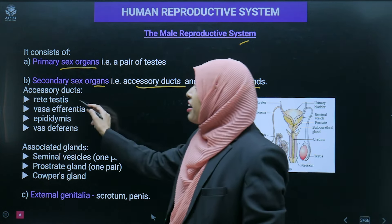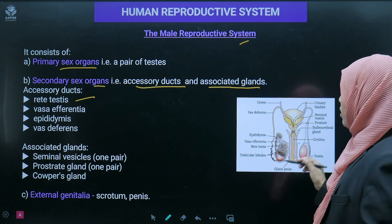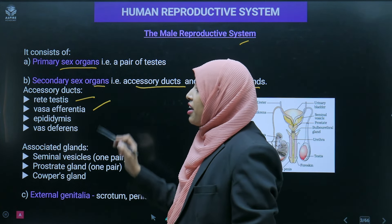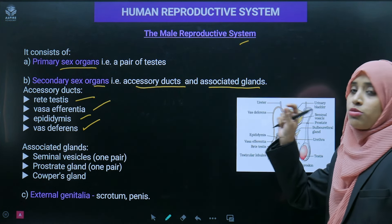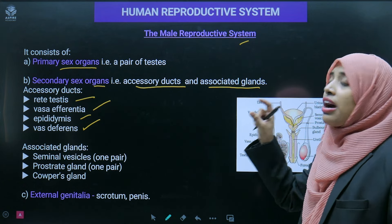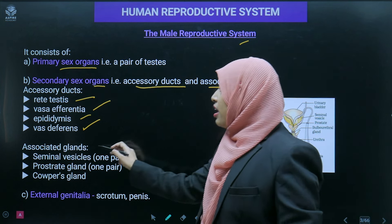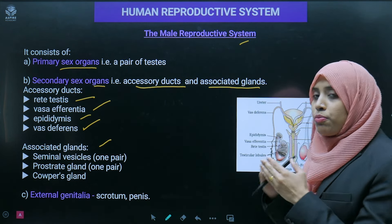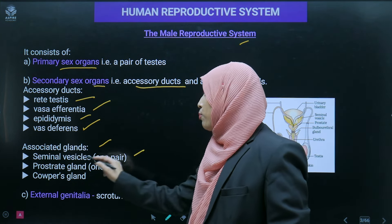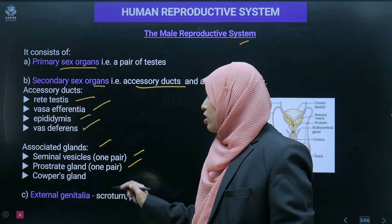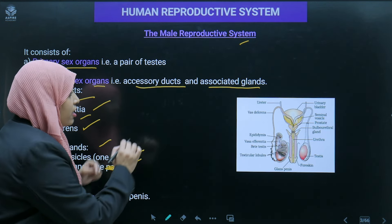The accessory ducts include rete testis, vasa deferentia, epididymis, and vas deferens — these help in the passage of the male gamete. The associated glands include seminal vesicles (one pair), prostate gland (single, not a pair), and Cowper's gland. These glands pour their secretions into the duct.